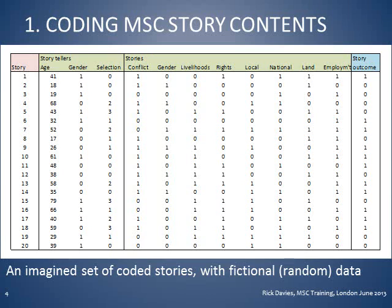Before talking about how to code stories, it is useful to look at a data set of coded stories so we know the sort of thing we hope to end up with. What you can see here is a set of stories listed row by row, with an identification number for each. Across the top are the various attributes of these stories column by column. There are three broad subcategories of attributes: some on the left are about the storytellers themselves — their age, gender, and whether the story was selected.